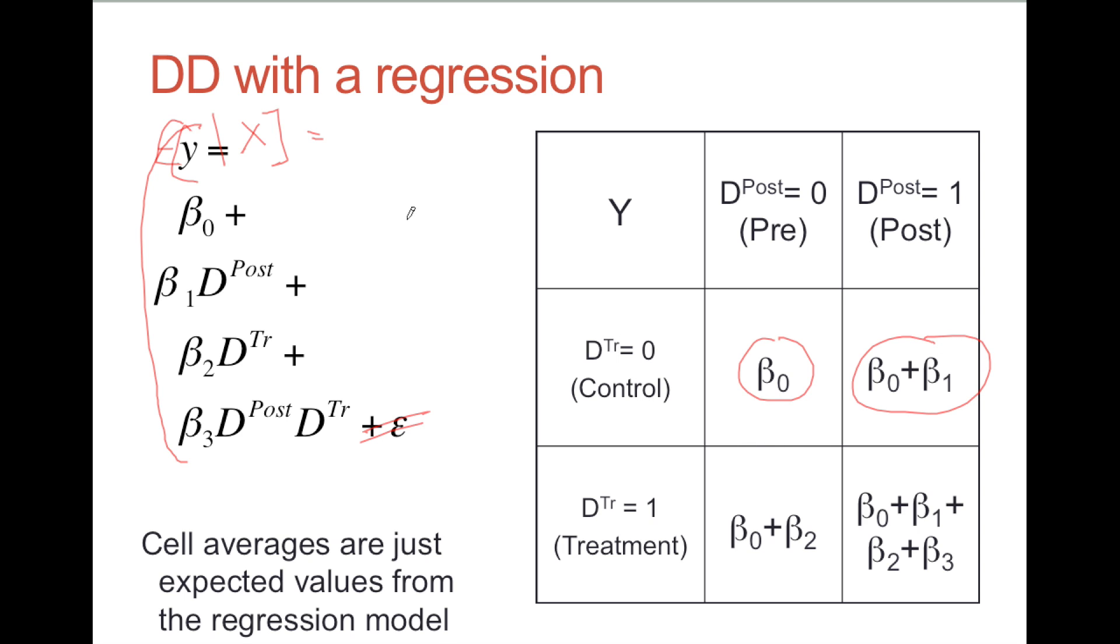So the expected value of the test score in the pre-period in the control area, so that would be Rio, is just going to be beta zero. And similarly, in the post-period, in the treatment area, the expected score is going to be the whole thing: B0 plus B1 plus B2 plus B3. The difference-in-difference estimate for the population is easy to compute.